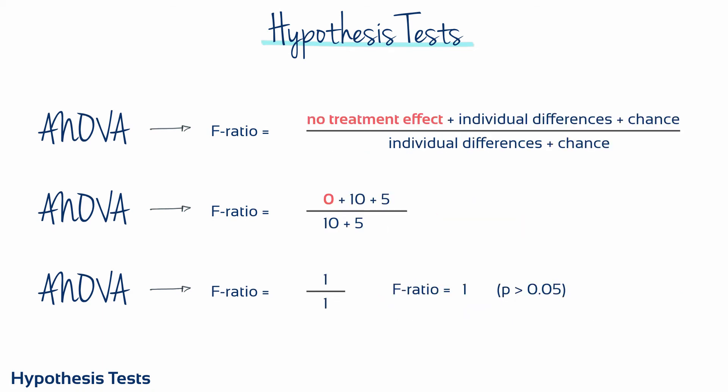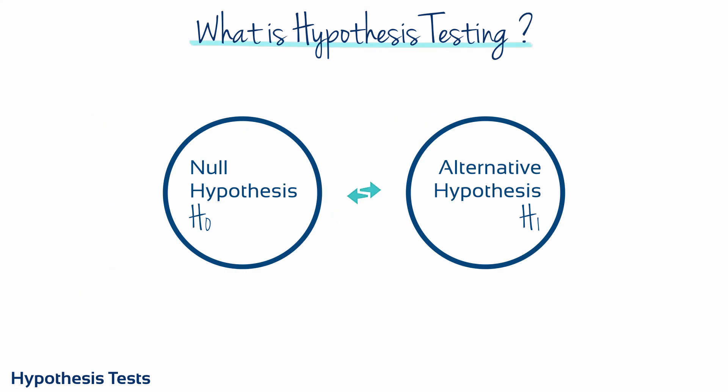Let's look at how this would play out in two scenarios. Firstly, let's consider a situation where your manipulation of the independent variable has no effect — we'll assign it the numerical value of zero. The individual differences have a value of 10 and the contribution from chance alone has a value of 5. Here the F-ratio would simplify down to one, and we would use p-values to interpret this result in the conventional way and accept or fail to accept the null hypothesis accordingly.